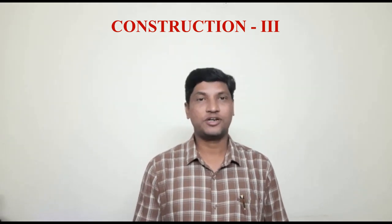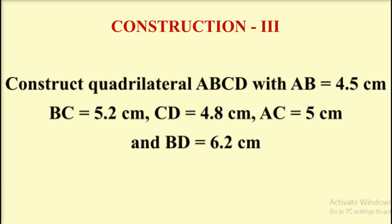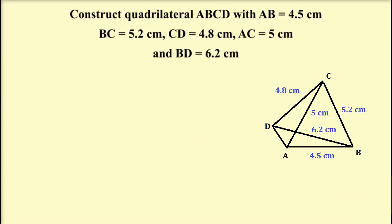Let us move on to our next construction: construction of a quadrilateral when the lengths of 3 sides and 2 diagonals are given. Let us take an example — construct quadrilateral ABCD with AB equal to 4.5 cm, BC equal to 5.2 cm, CD equal to 4.8 cm, AC equal to 5 cm, and BD equal to 6.2 cm. Before we start the construction, let us first draw the rough sketch of this construction.